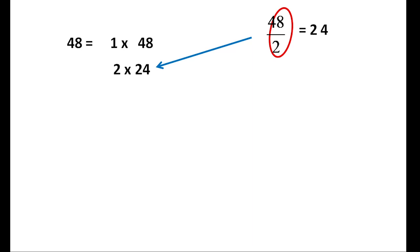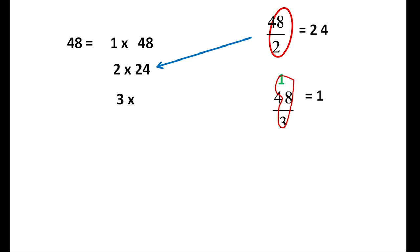Now we have to check 3 in the table. We will check the divisibility rule — we will add the digits of the number. I explained this in a previous video; I will put the link in the description box. 3 into 16 is 48. So 3 and 16 are factors of 48.